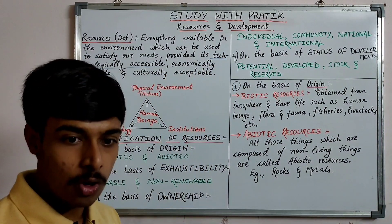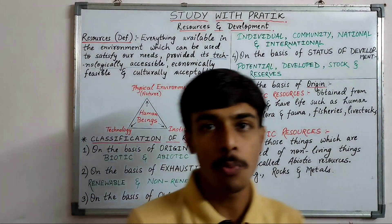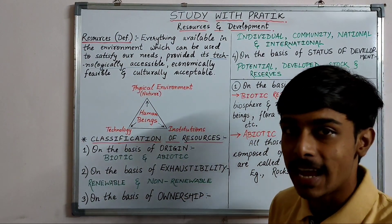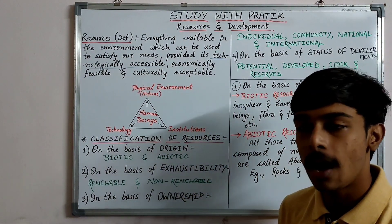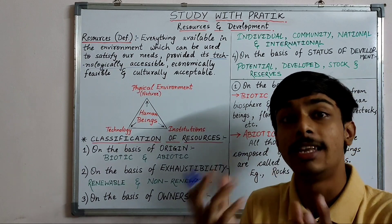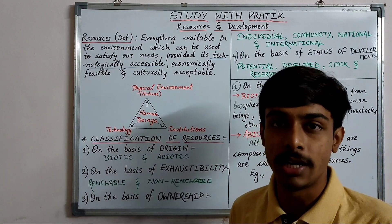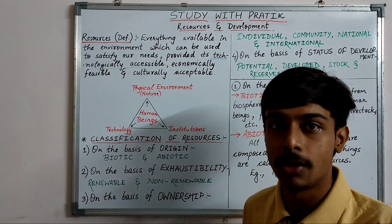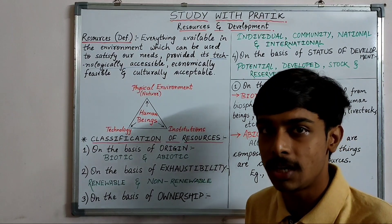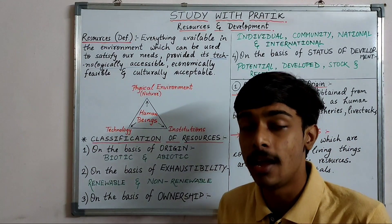The first point is technologically accessible — meaning whatever modern technology and modern techniques we have, we can use them to procure resources. Everything which is there in our surroundings, in our environment, which we are getting from nature, all of that is a resource.